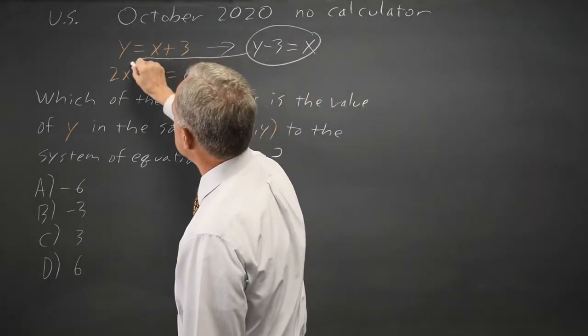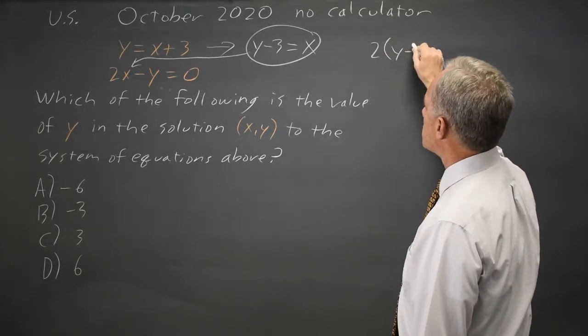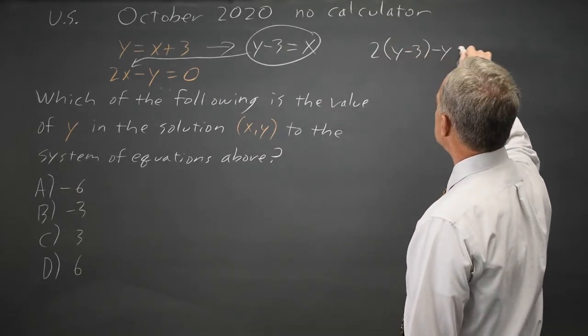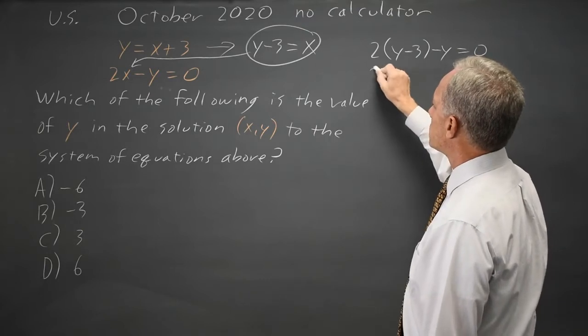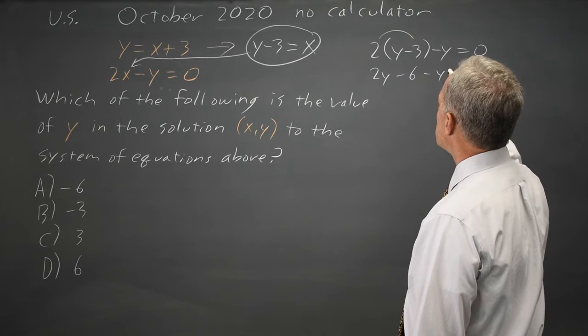Put that in for x in the second equation, and I get twice x is twice y minus 3 minus y equals 0. Distributing, twice y minus 2 times 3 is 6, minus y equals 0.